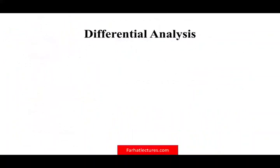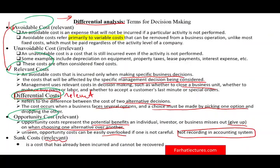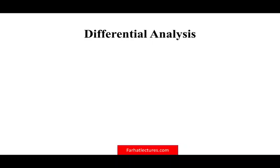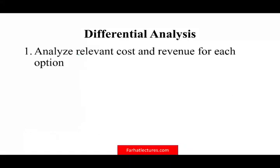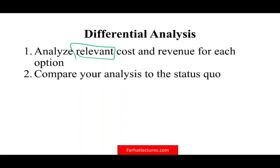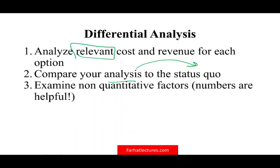So how do we make differential analysis? We also have differential revenues — if you're choosing between two alternatives, you have to look at whether they differ in terms of revenue too. First, we analyze only relevant costs, not all costs and revenues. You only look at costs that differ — if two costs are the same, you don't examine them. Then you compare your analysis to the status quo, and you also examine non-quantitative factors, because at the end of the day you have to make a professional judgment.